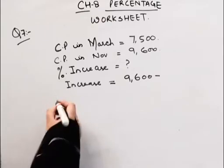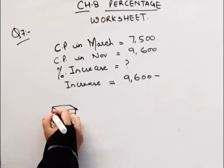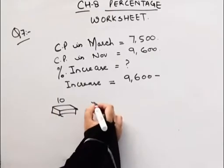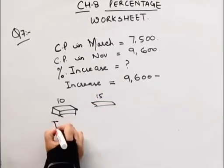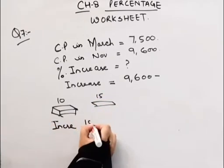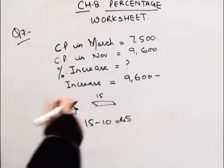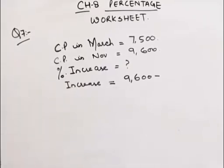Suppose you buy a packet of biscuits in the morning for Rs. 10. In the evening, the biscuit packet is Rs. 15. So what do you say? How much did the cost price increase? 15 minus 10, that means Rs. 5. You say that it increased by Rs. 5 in the packet. Clear? Same is the case here.